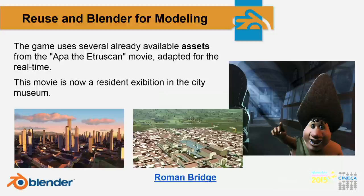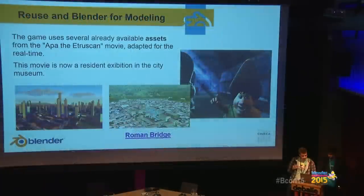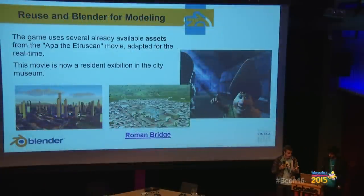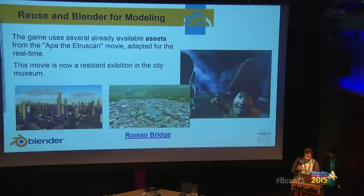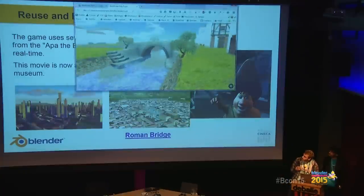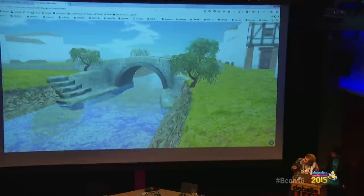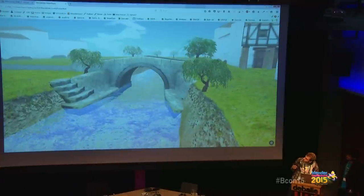We have these models and we can re-adapt them for real time — they are high-poly, so we re-adapt them. For example, this still shown here is Roman Bologna. We grabbed some models, re-elaborated them for real time, and created an asset for the game — just an environment in the Blend4Web engine.